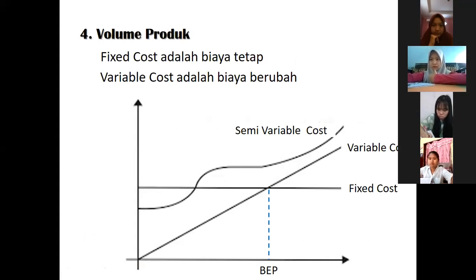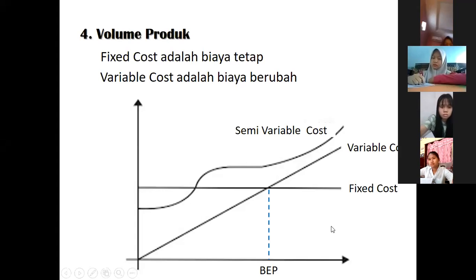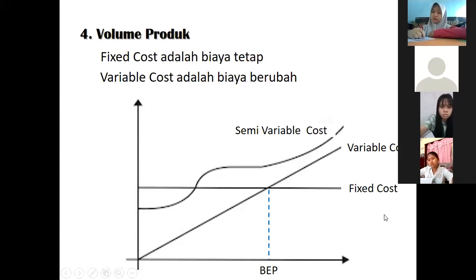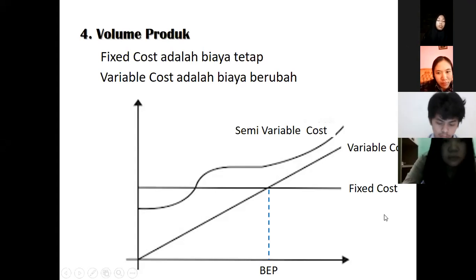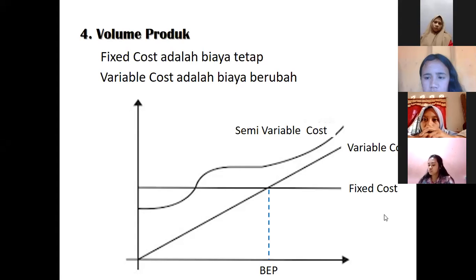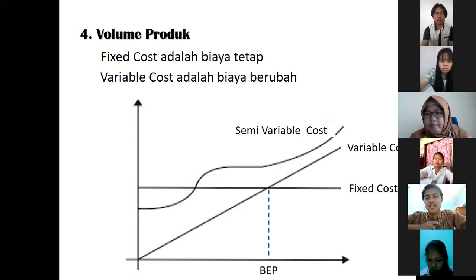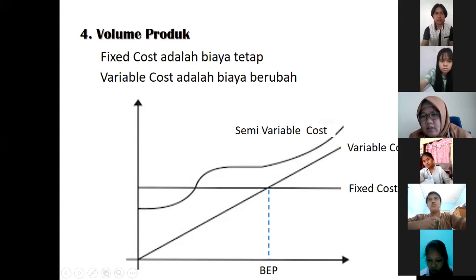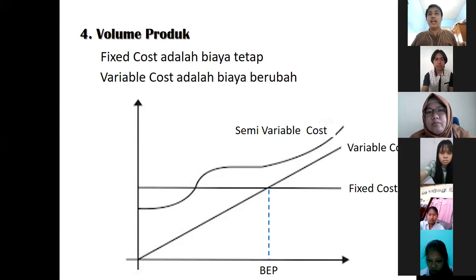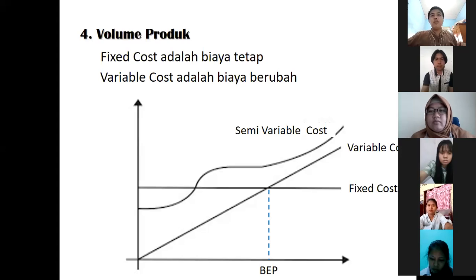Ini kalian sering dengar nggak? Fixed cost, variable cost. Biaya tetap, biaya berubah. Pernah dengar? Apa bedanya? Apa artinya biaya variable? Ada yang tahu? Ini kalau tahu saya kasih nilai. Indra: variable cost itu biaya yang dikeluarkan dimana nilainya itu bisa berubah-berubah, nggak selalu tetap. Kalau biaya tetap itu, volume produksi sebesar apapun, biayanya tetap akan sama. Intinya biaya tetap itu, volume produksinya berapapun, biaya tetap. Kalau biaya variable atau biaya berubah, dia tergantung dengan jumlah produksi.